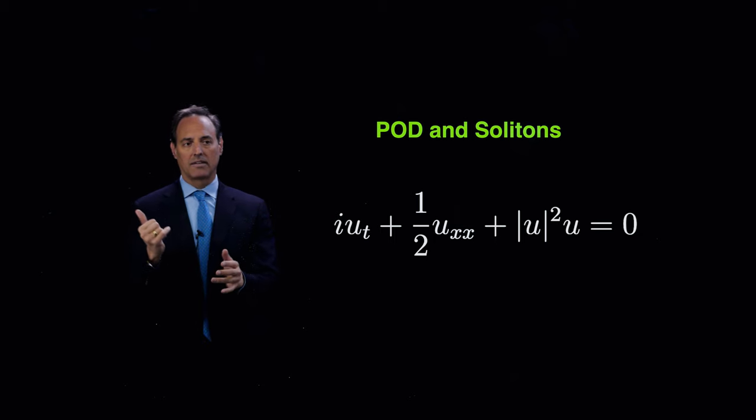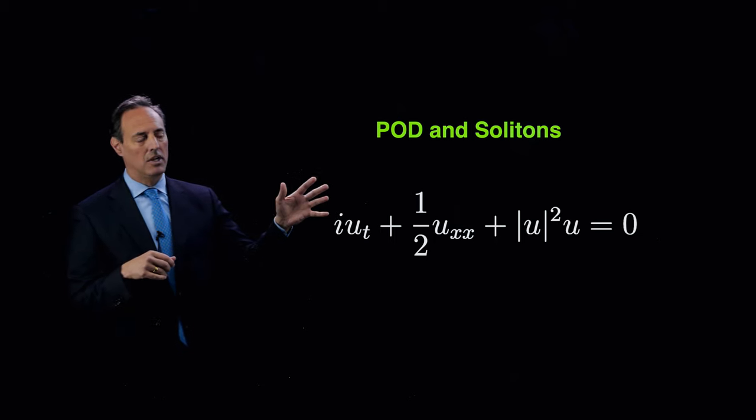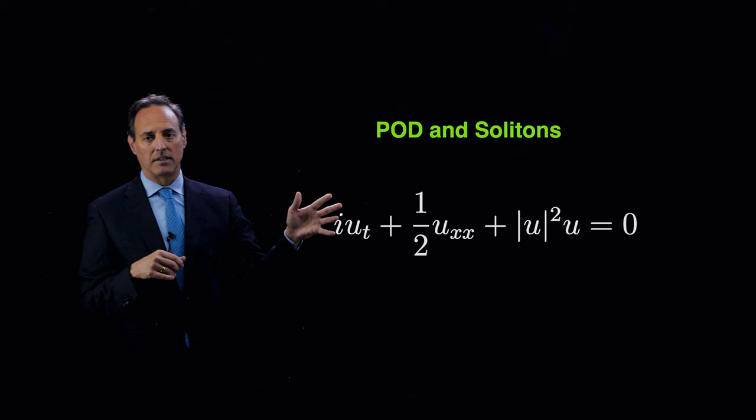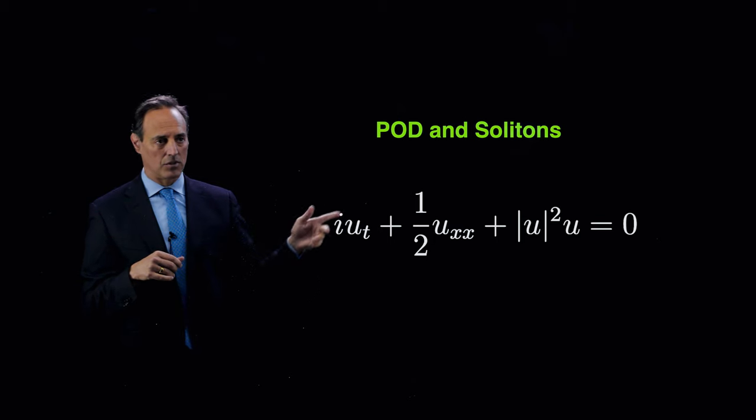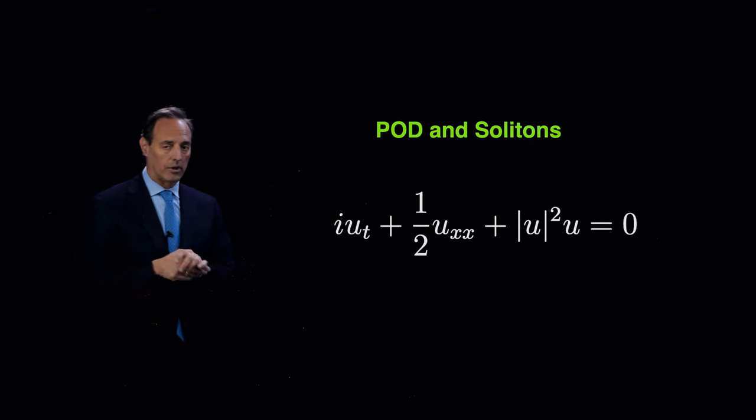I talked about that in the last lecture. What I want to do in this lecture is to actually contextualize this in terms of an example system, which is the nonlinear Schrödinger equation.